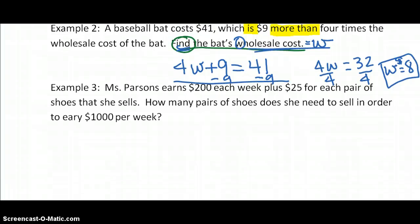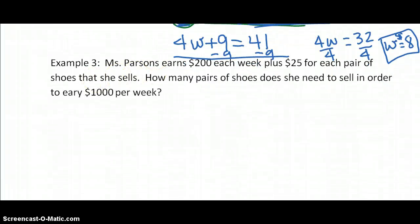All right. The last example I'm going to work with you today is Mrs. Parsons. She earns $200 each week plus $25 for each pair of shoes that she sells. How many, they're asking us for a number here, how many pairs of shoes does she need to sell in order to earn $1,000 per week? So we're going to let, I'm going to say P equals pairs of shoes. That's what we're solving for. How many pairs of shoes does she need to sell?